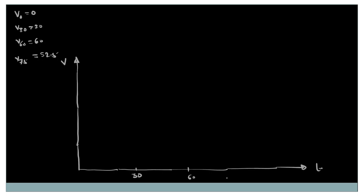The Y-axis is the velocity axis and the X-axis is the time axis. On the Y-axis, you can take a suitable scale as per the maximum value. The maximum value is equal to 60, so depending on that you can take this scale on the graph paper.